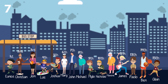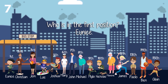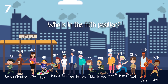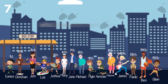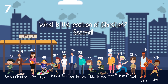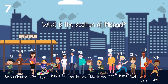Look at the picture below. There are people waiting at the bus station. Who is in the 1st position? What is the position of Eunice? Who is in the 5th position? Joshua. Who is in the last position? Alvin. What is the position of Christian? 2nd. What is the position of Michael? 8th.